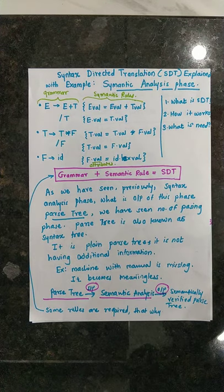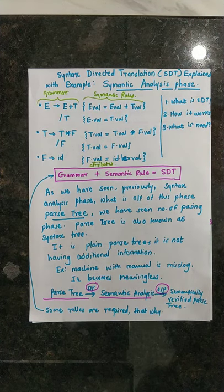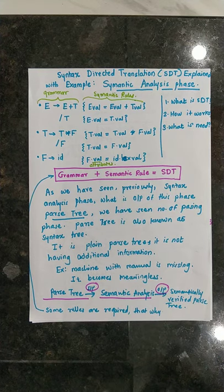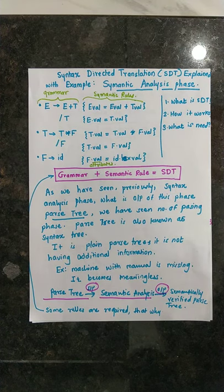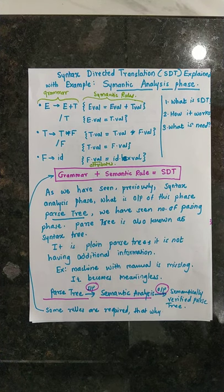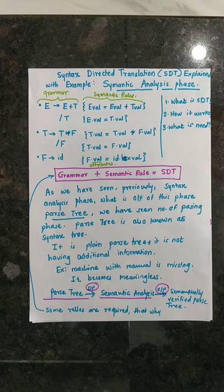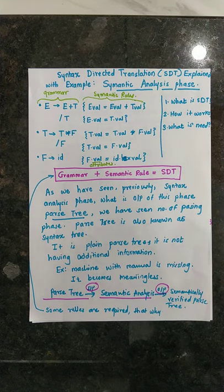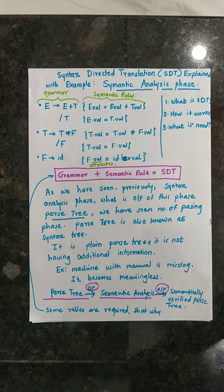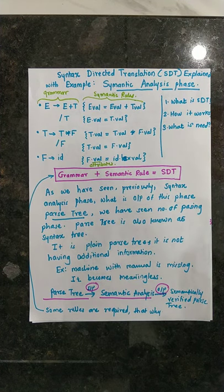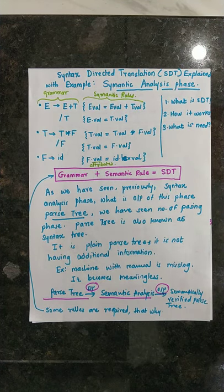The parse tree is a plain parse tree — it does not have additional information. For example, suppose you bought some machine and it is missing its manual. Without the manual, you don't have information on how to use that machine. Similarly, the parse tree is an input to semantic analysis, and semantic analysis gives you a semantically verified parse tree as output.